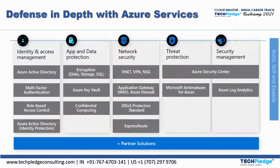Now let's see what Azure services actually offer us. We have identity and access management, which includes Azure Active Directory, multi-factor authentication, role-based access control, and identity protection. You can also protect your apps and data, your network, and do threat protection or security management. From the next module, we'll see one by one how to protect storage, data, the network, and the different security factors.